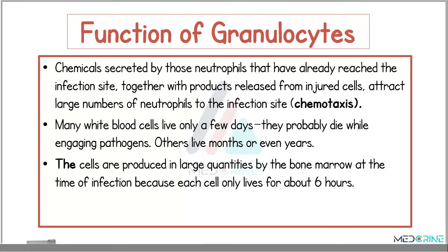Chemicals secreted by neutrophils that have already reached the infection site, together with products released as a result of cell injury, attract more neutrophils to the infection site through a process known as chemotaxis. Many white blood cells only live a few days — they probably die while engaging with pathogens — while others live months or even years. Cells are produced in large quantities by the bone marrow at the time of infection because each cell only lives about 6 hours.